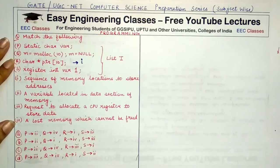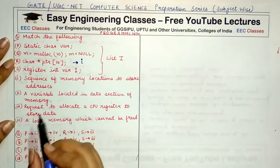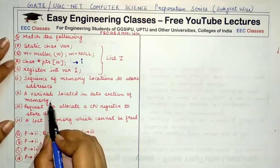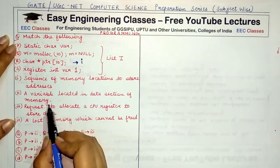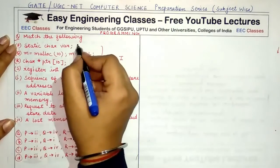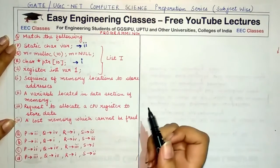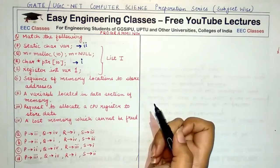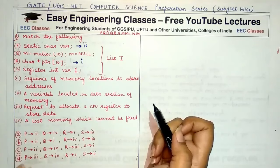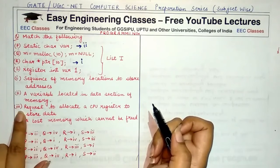The second list-two option says 'a variable located in data section of memory.' Whenever you allocate a static variable, it is always allocated from the data section of memory. So this corresponds to option P — the static char variable. You need to remember such details to be thorough with these questions.